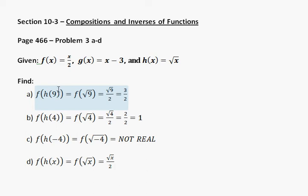If you put 9 in for x here, you get the square root of 9. So you put the square root of 9 into the f function here, and that gets you square root of 9 over 2. Well, the square root of 9 is just 3, so your answer is 3 halves.